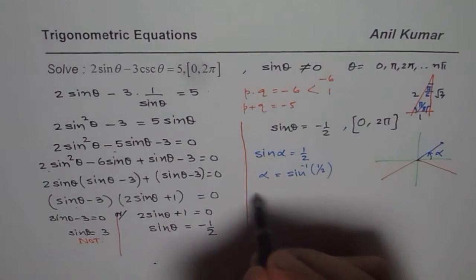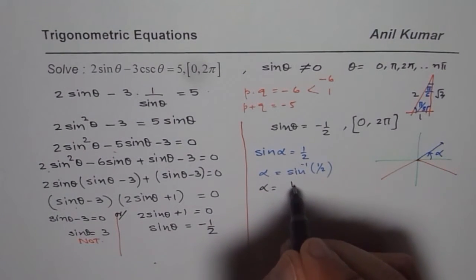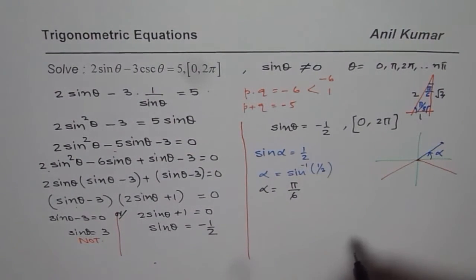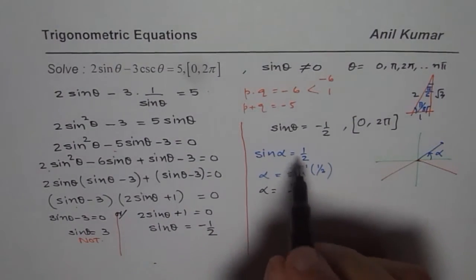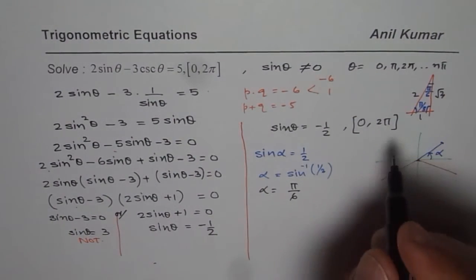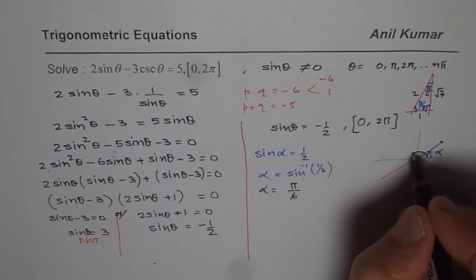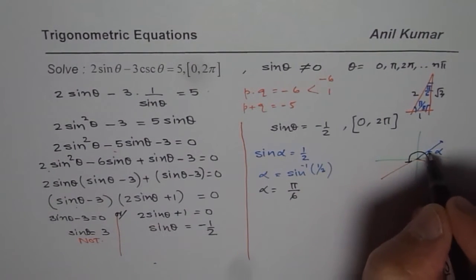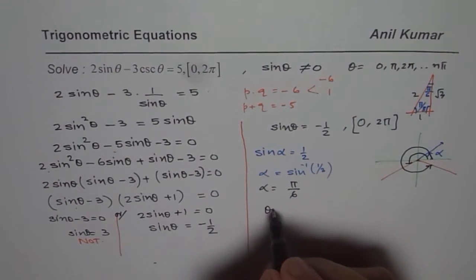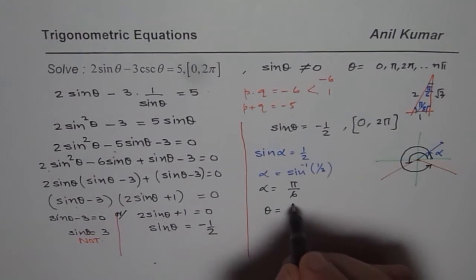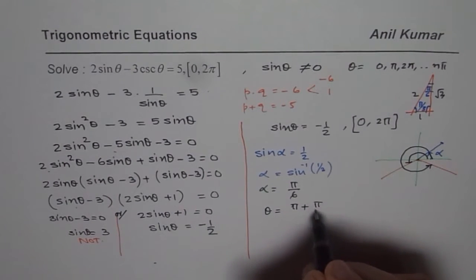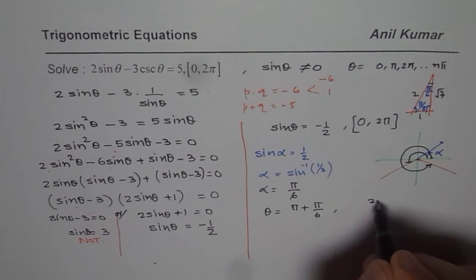You can use calculator to get the same answer. But our answer theta within 0 to 2 pi, we need minus half. So minus means we are in quadrant 3 or in quadrant 4. So these are the two solutions. So for us theta equals to either pi plus pi by 6 or it is 2 pi minus pi by 6.